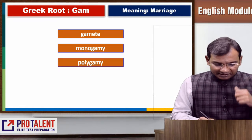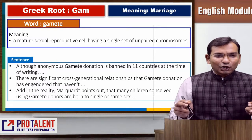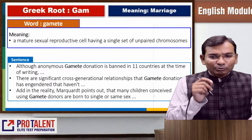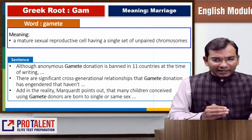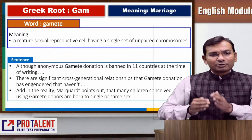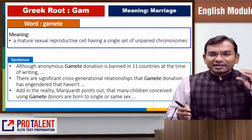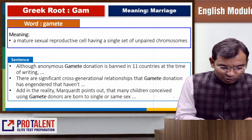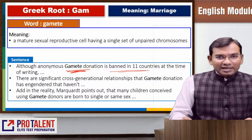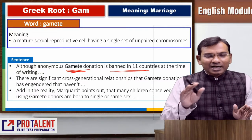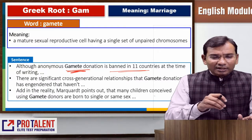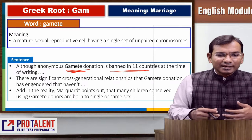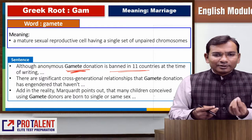Gamete refers to a mature sexual reproductive cell having a single set of unpaired chromosomes. Anonymous gamete donation is banned in 11 countries. An anonymous gamete donor means someone who doesn't want to marry but provides chromosomes or eggs as a donation.